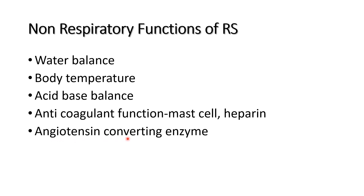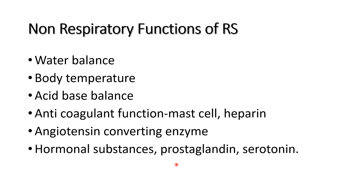The angiotensin-converting enzyme converts angiotensin I to angiotensin II, so the lung has an endocrine function as well. It also produces hormonal substances like prostaglandins and serotonin. The lung also decides whether to eliminate or retain substances in the respiratory tract.